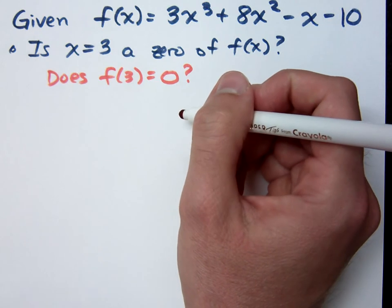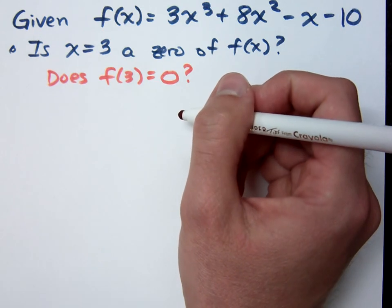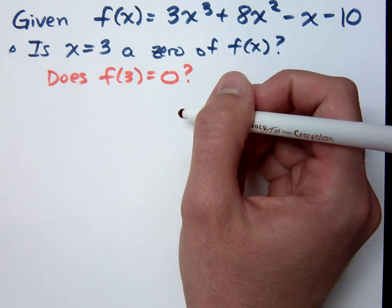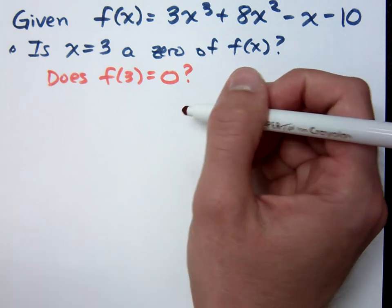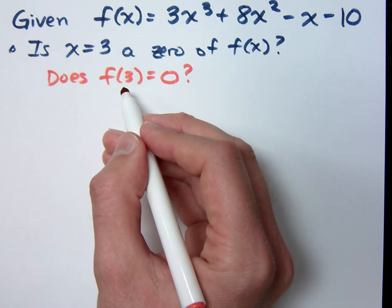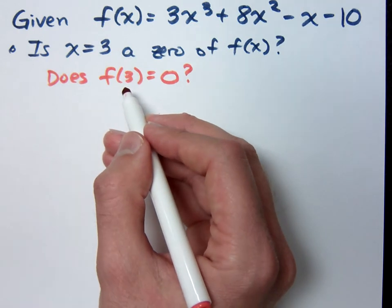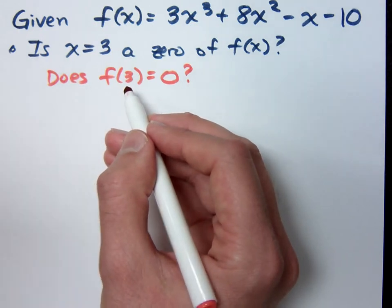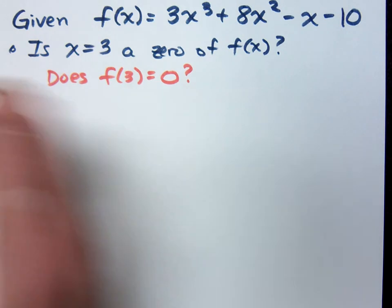Now I don't want you to plug in 3 into this. I want you to use synthetic division. Because if I use synthetic division with 3, what should my remainder equal? Zero. So if it doesn't equal zero, it's not going to be a zero.